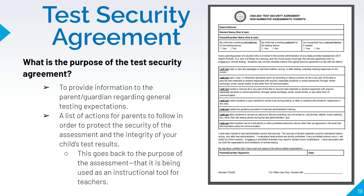Every parent and guardian of a student involved in remote administration of any state-provided assessment must sign the security agreement prior to engaging in remote testing. Those tests could include the ACT Aspire Periodic, the MAP Assessments, or the Civic Assessments. Students may not test remotely without this signed security agreement on file with the district. When you sign, you agree: I will not read or review the passages or test items before, during, or after testing, including viewing responses on the screen. I will not save, copy, or otherwise reproduce — such as recording or taking a picture of — all or any part of the test, security test materials, or student responses, or share them with anyone through verbal exchange, email, social media, or any other form of communication.